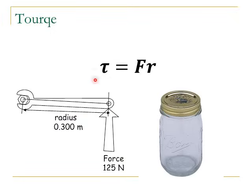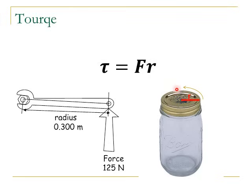Torque, which you should already know, is force times radius, or distance from the pivot point. For this wrench, the radius is this length. If you're trying to unscrew something and you're having a hard time, if you get a longer wrench, it'll make it a lot easier because you can get a whole lot more torque if your radius is bigger. Same thing with screwdrivers and round objects — the larger the lid, the easier it is to spin it. You can get more radius, therefore more torque.